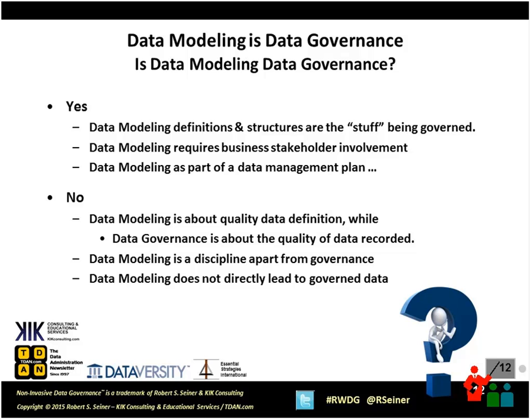Data modeling is about the quality of data definitions, and data governance in general is about the quality of the data that are recorded — the data that businesses are using. Data modeling provides the buckets, or the places to store that. The discipline of data modeling is an intellectual discipline to try to represent things on paper in a coherent way. Data governance is about getting various people to do things in a coherent way. For that reason, a brilliant, wonderful data model does not necessarily result in well-governed data.